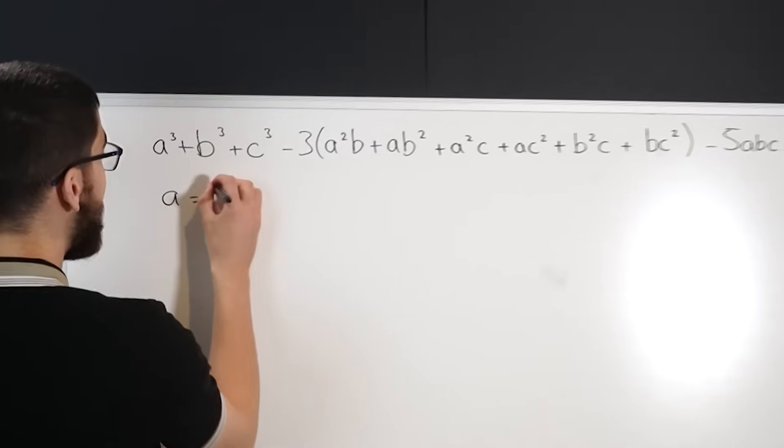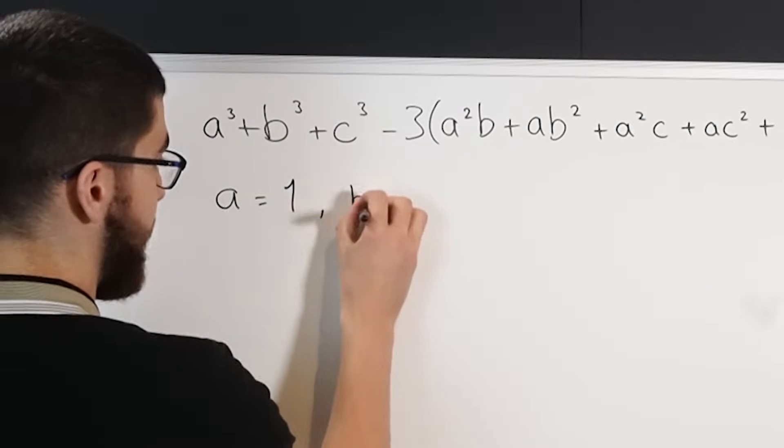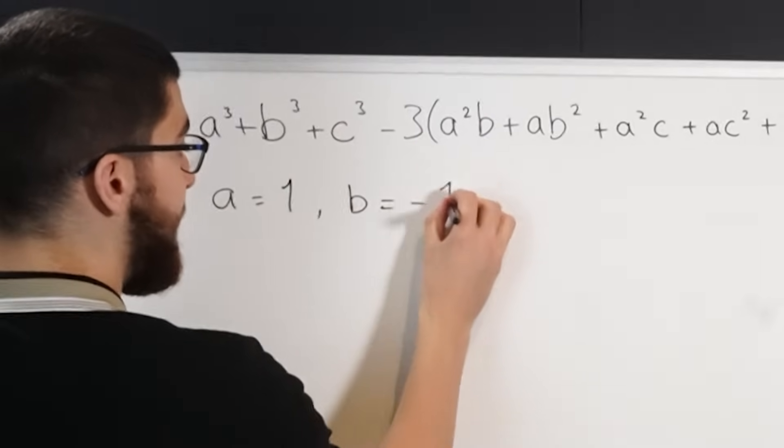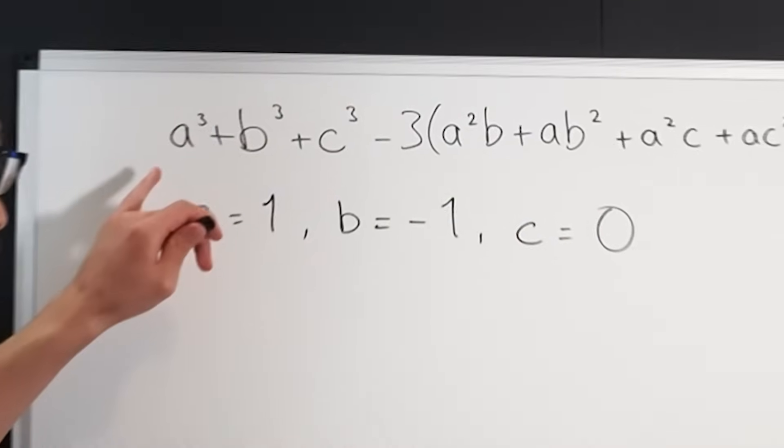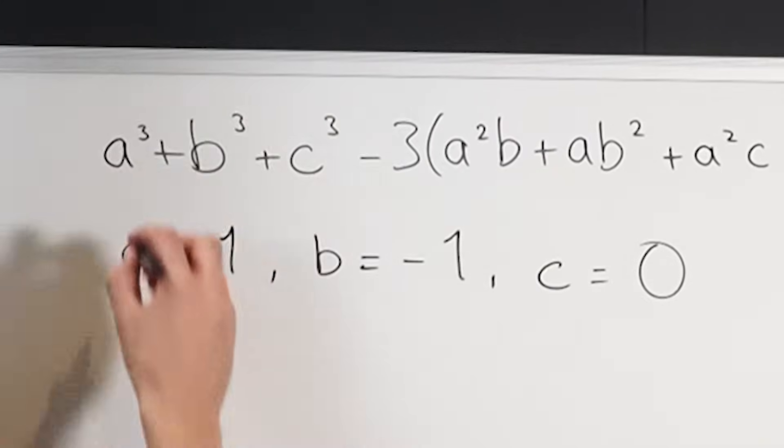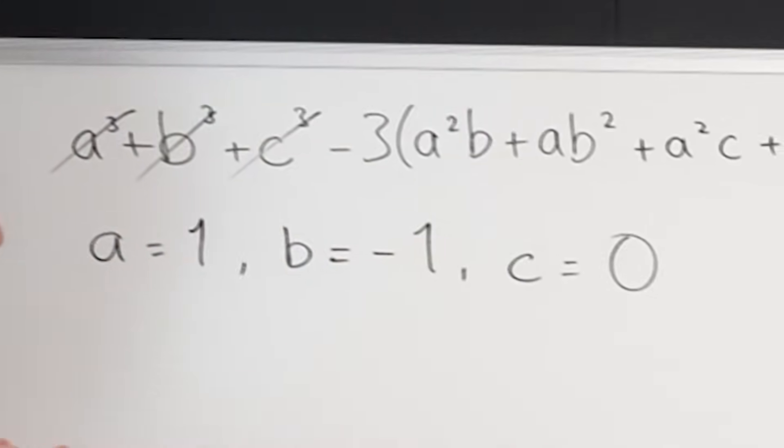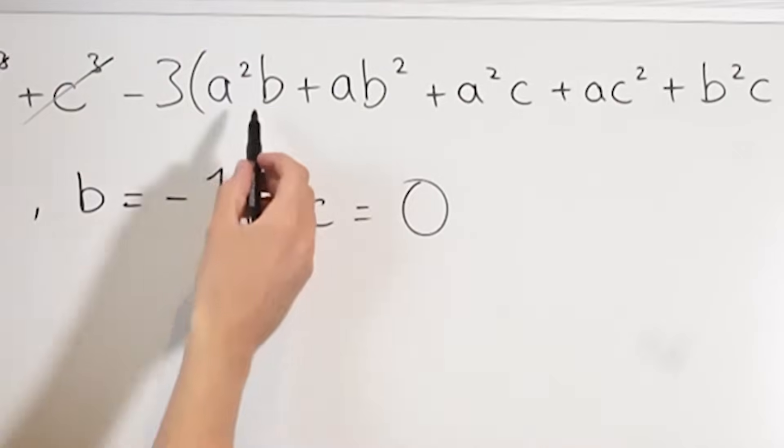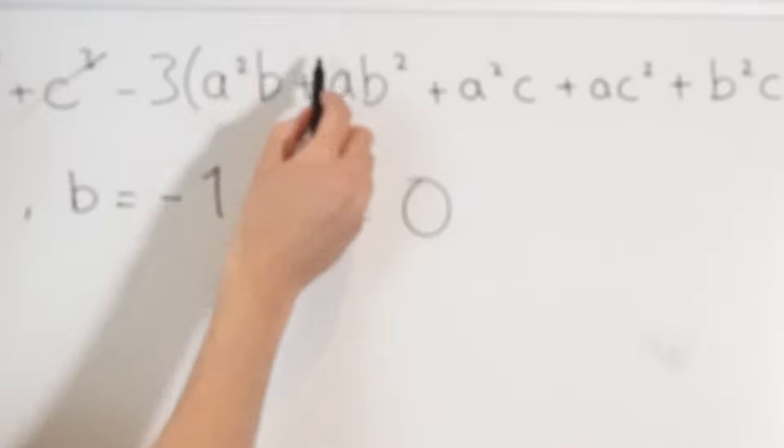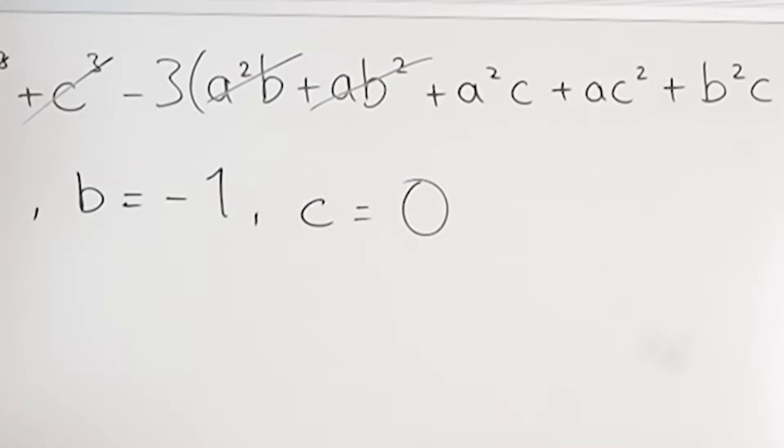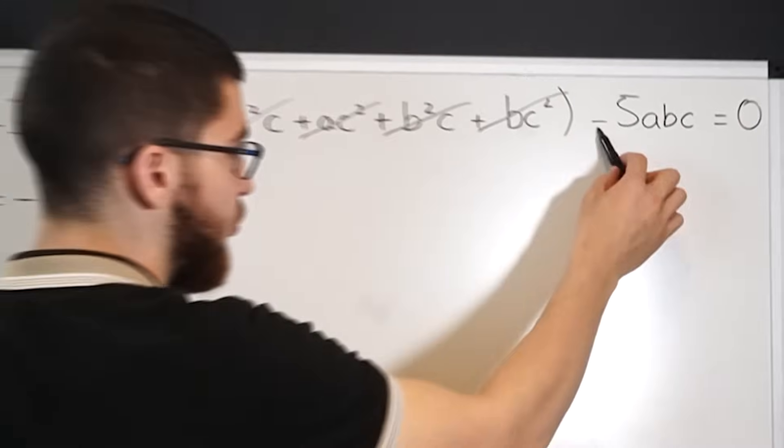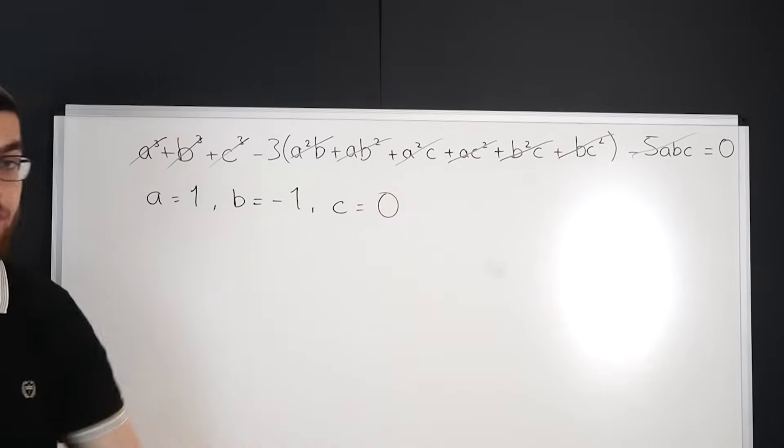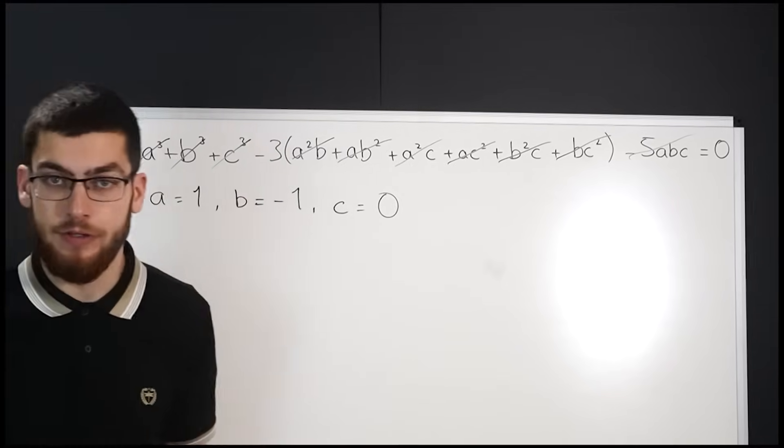Now if you're very observant then you might have noticed that there is a simple solution. a is 1, b is minus 1 and c equals 0 because if you plug these in then you get 1, minus 1 cancels out, c is 0, is 0, minus 3 lots of this would be minus 1, this would be plus 1 so they cancel out, this would be 0, 0, 0, 0 and this would be 0 as well so it all would turn out to be 0. But these are not positive so that's no good.